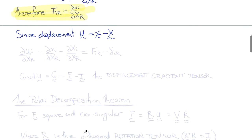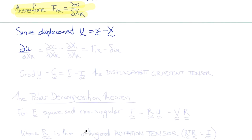Now, since displacement is little x minus big X, then the displacement gradients del ui del big Xr equal del xi del big Xr minus del big Xi del big Xr, which is fir minus delta ir.